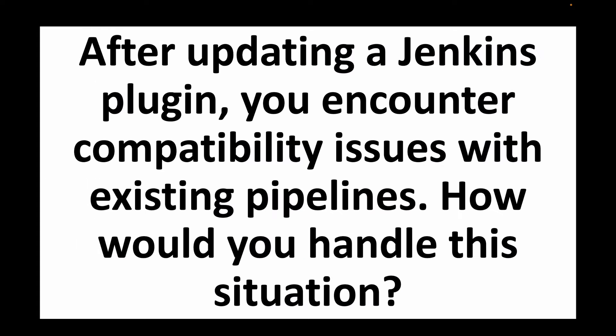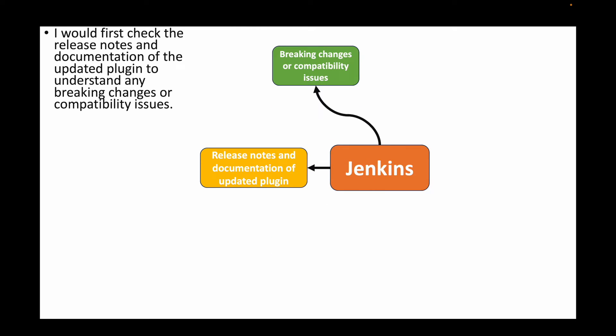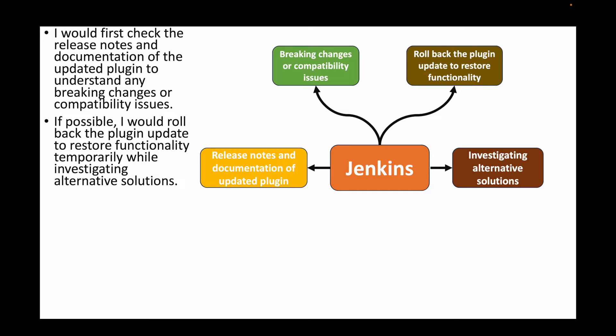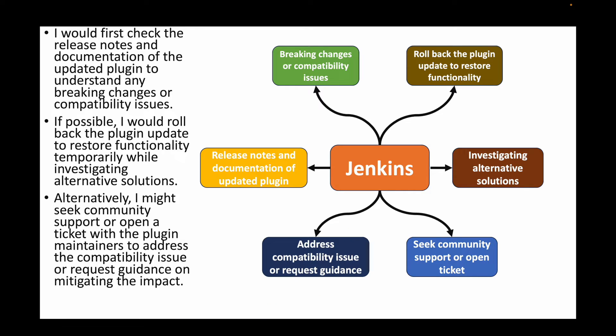The next question: after updating a Jenkins plugin you encounter compatibility issues with existing pipelines — how would you handle this? First, check the release notes and documentation of the updated plugin to understand if there are any breaking changes or compatibility issues. If possible, roll back the plugin update to restore functionality temporarily while investigating alternative solutions. You can also seek help from community support or open a ticket with the plugin maintainer to address the compatibility issue.